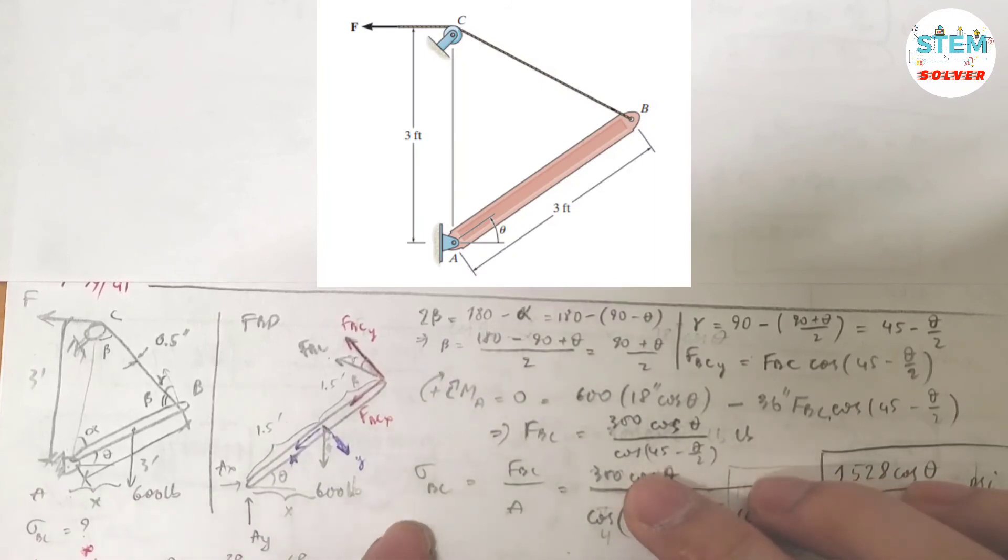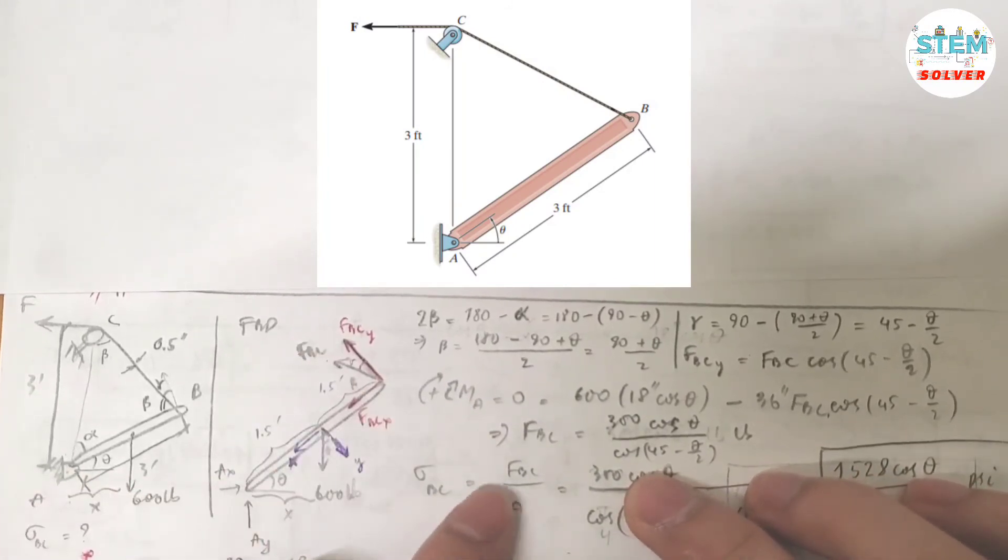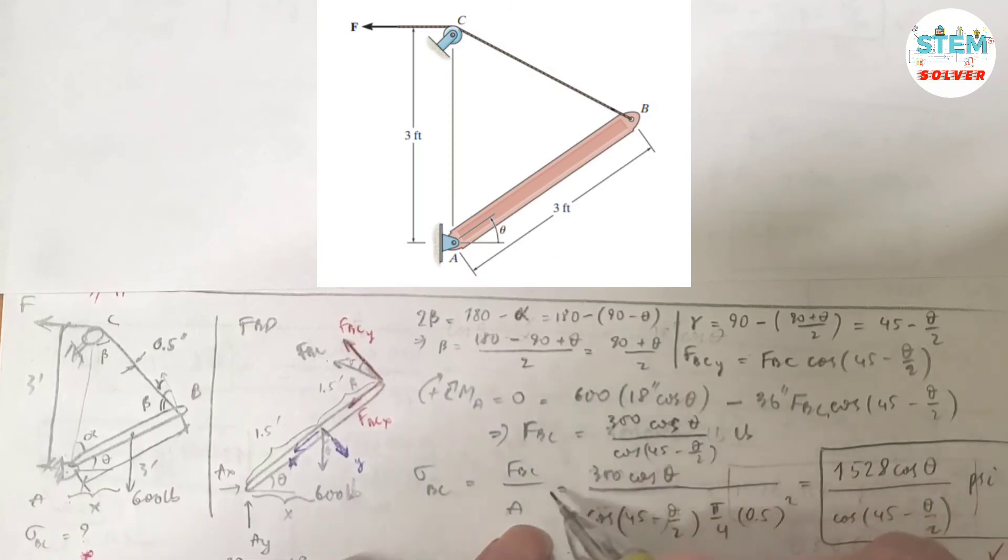Then the normal stress in cable BC is equal to the force divided by the area. The force is this one. The area is pi over 4 times 0.5 in squared.